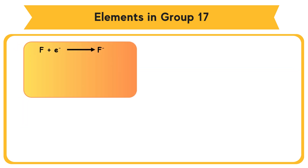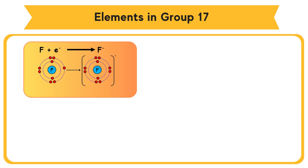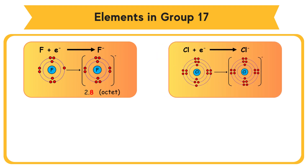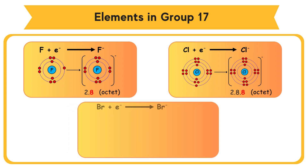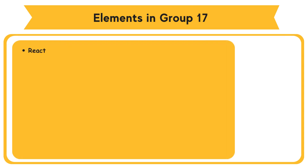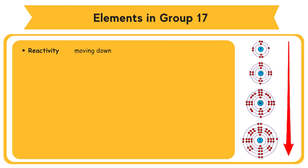For example: Fluorine receives one electron and forms a negative 1 charge, achieving octet electron arrangement. Chlorine receives one electron and forms a negative 1 charge, achieving octet electron arrangement. Bromine receives one electron and forms a negative 1 charge, achieving octet electron arrangement. The reactivity of Group 17 elements decreases moving down the group.